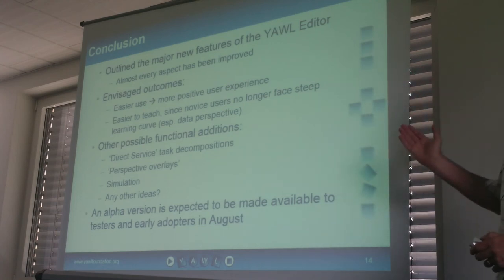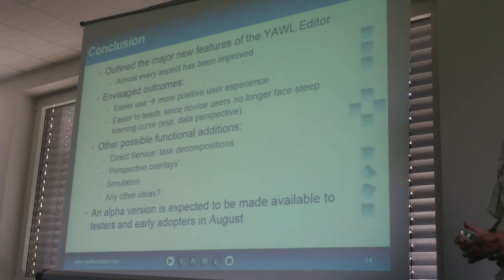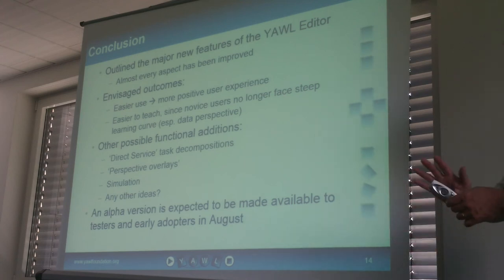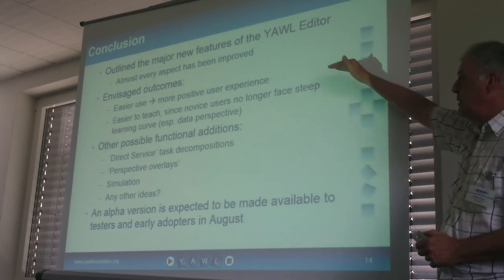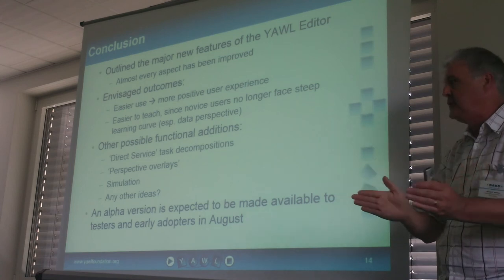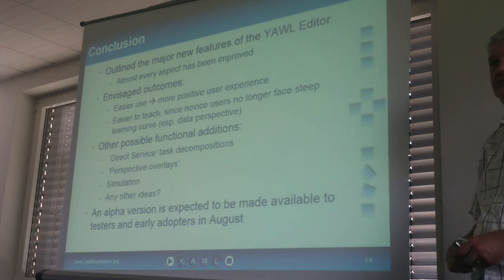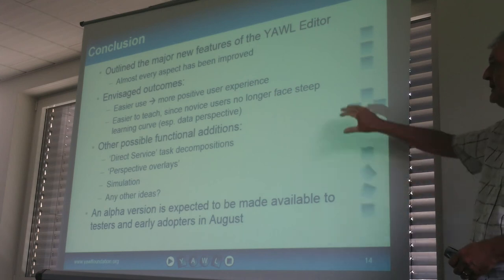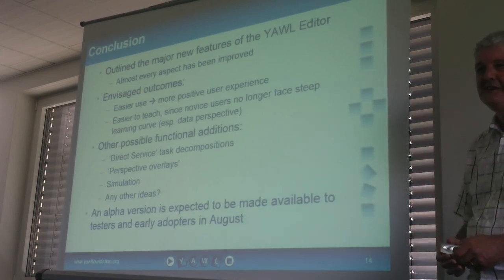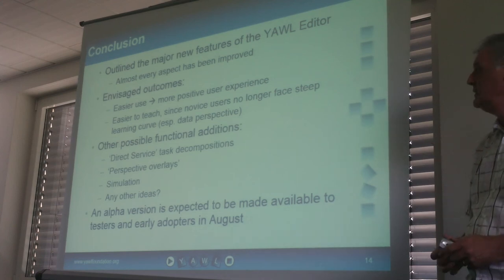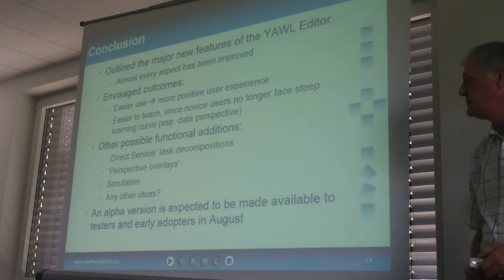A very brief overview of the major features — almost everything has changed under the hood. The current editor has about 600 classes; 200 of them have been removed completely, so a lot of complexity has gone from under the surface as well. The overall aim is to separate the backend so any number of UIs can be written, and also to make the editor easier to use — delivering a more positive user experience and making it easier to teach, without having to spend three classes teaching XML. Other possible additions may include a direct service task configuration, where you just choose the service you want a task to interact with and it will automatically create the net-level and task-level variables and create the mappings.